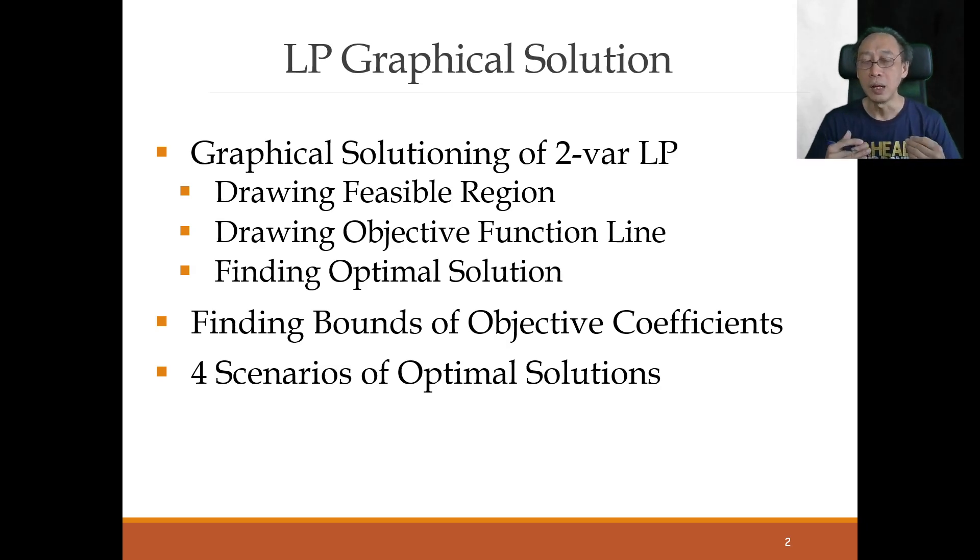Next we're going to find the bounds of objective coefficients. What are the bounds that would limit the optimal solution to be still optimal when the coefficients of the objective function change? So if they change, then to what extent can they change so that the optimal solution remains optimal? And then we look at four scenarios of how optimal solution or solutions might prevail or might be observed in generalized LP models.